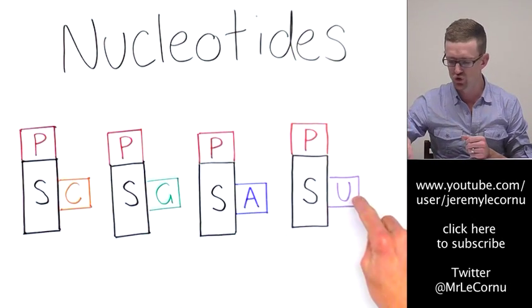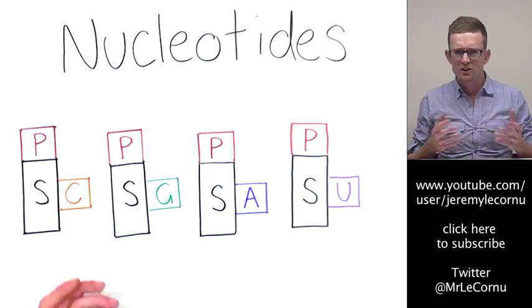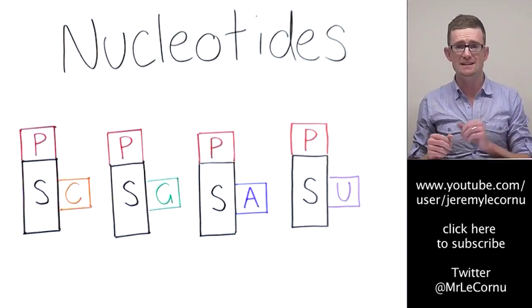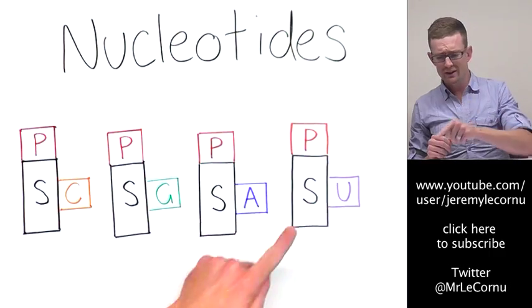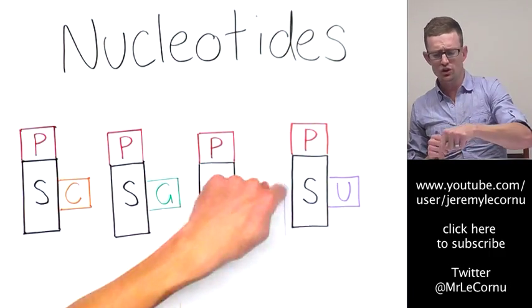In RNA, we have uracil, which is U, and it replaces T. So that's a major difference between DNA and RNA. One of the bases is different. The sugars are different.